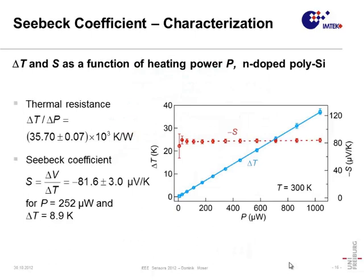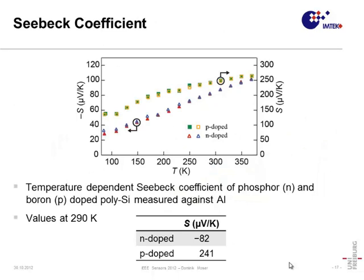The test structure for the Seebeck coefficient is characterized by measuring the temperature difference at the thermocouple and the Seebeck coefficient as a function of heating power. As expected, the temperature difference increases linearly with the heating power, whereas the Seebeck coefficient is constant with heating power. At a fairly low heating power of 252 µW, a Seebeck coefficient of −81.6 ± 3 µV/K was found. The temperature-dependent Seebeck coefficient of phosphorus- and boron-doped polysilicon measured against aluminum is shown for each two samples. The values for n-doped polysilicon are found to be −82 µV/K and for p-doped polysilicon +241 µV/K.